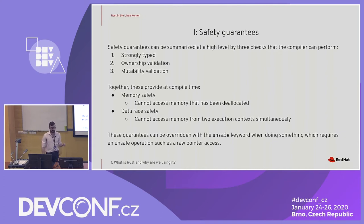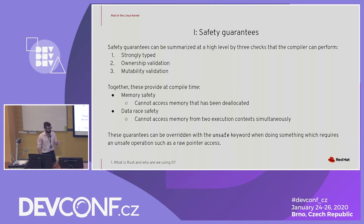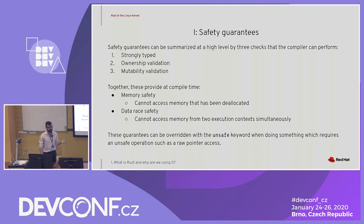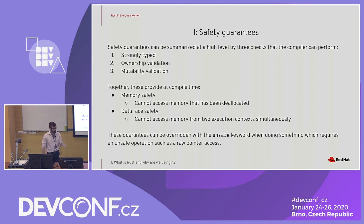Rust's safety guarantees: it's strongly typed, enabling intense type validation. It has ownership validation — which scope owns data at what time — and mutability validation, which controls which references can mutate at a given time. Together these provide memory safety (no dangling pointers in safe Rust) and data race safety (can't access data from two locations for write access at the same time). All of these guarantees can be overridden with the unsafe keyword.